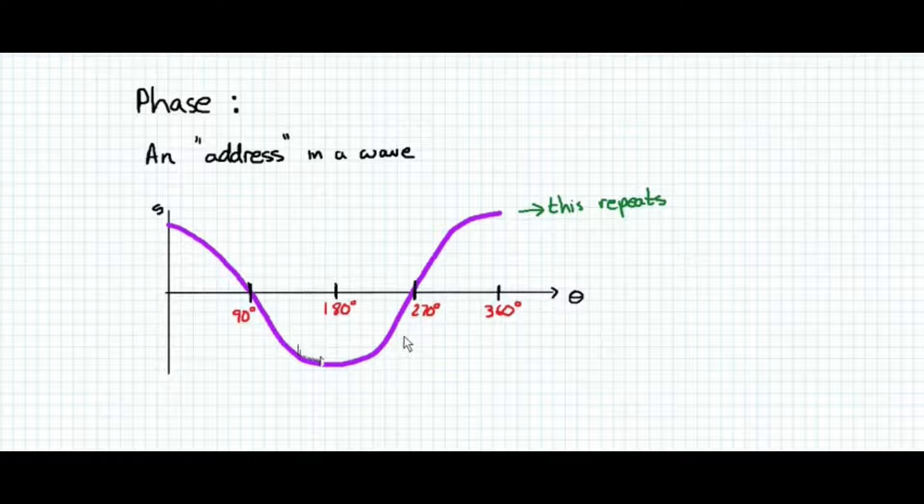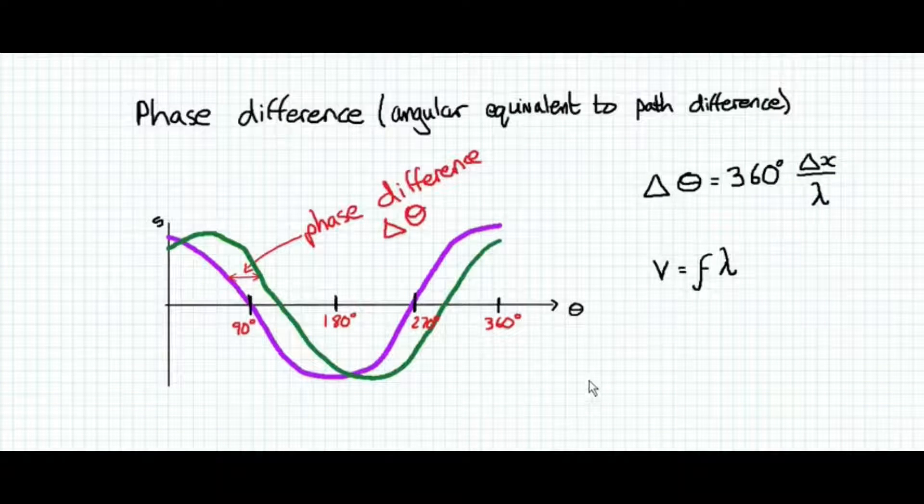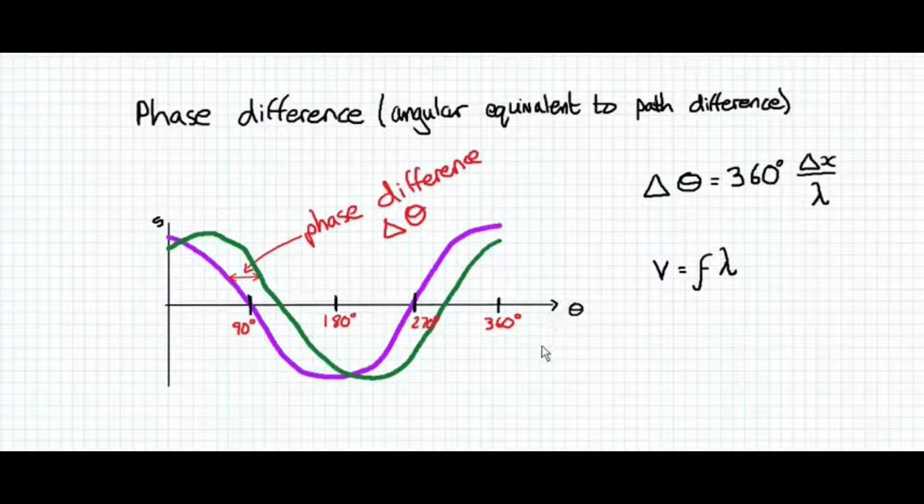It is just another way of referencing where within a wave we are, but this way is independent of wavelength or time period. Phase difference is similar to path difference. It's the angular equivalent to the path difference.